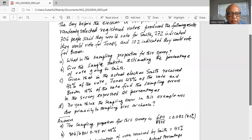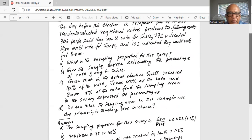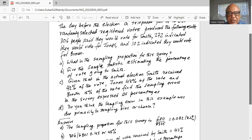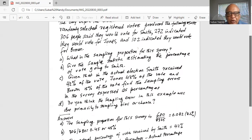Part B: given the sample statistic, estimate the percentage of votes going to Smith. So 306 people said they would vote for Smith. So it is 306 divided by sample size 680, or 0.45.